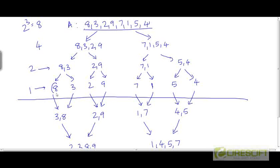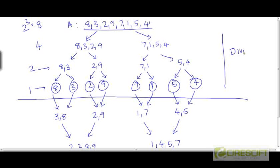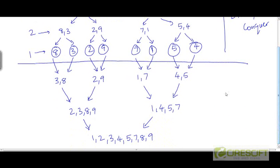Now, once merge sort runs on these singleton elements and returns them — because the algorithm doesn't need to do anything — we now need to combine solutions to these subproblems to produce solutions to the original larger subproblems. So 8 and 3 will be merged together. Everything above this line corresponds to the dividing and conquering steps, and below this line we are going to combine the solutions to the subproblems and generate the solution to the original problem.